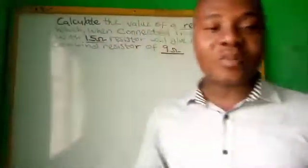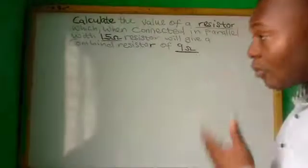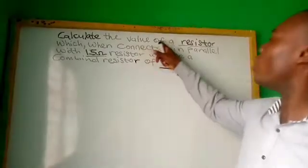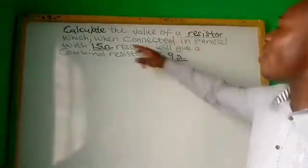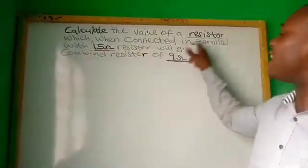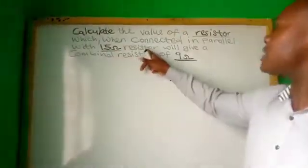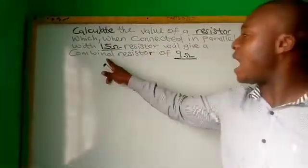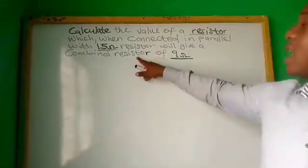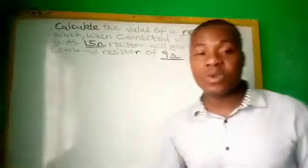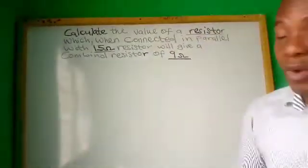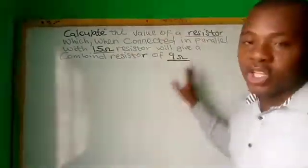Alright, welcome back to my YouTube channel. We have a question on the board, let's look at it. Calculate the value of a resistor which, when connected in parallel with a 15 ohm resistor, will give a combined resistor of 9 ohms. In cases like this, you have to understand the question very well.